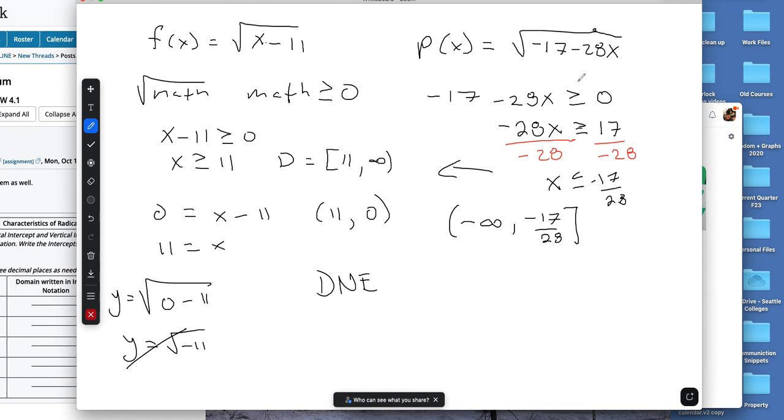The x-intercept is going to be this exact same math. So just like I did here, I would put this equal to 0, bring the 17 over and divide by 28. And then that would get me when the output was 0, the input would be negative 17/28. So exactly the same as I did there. So negative 17 minus 28x equals 0. Solve that out and you get this.